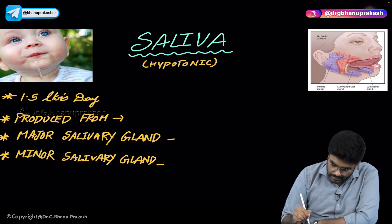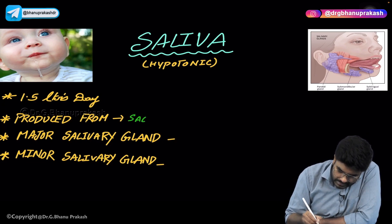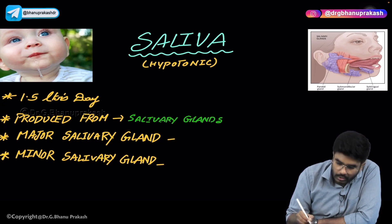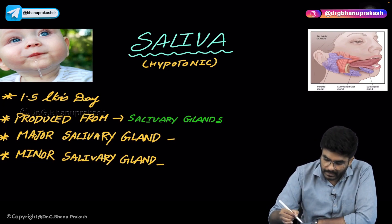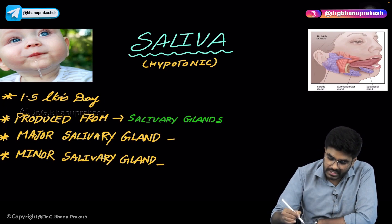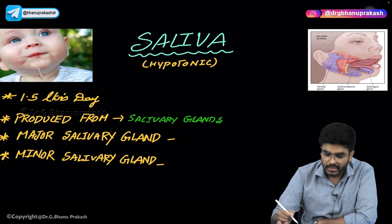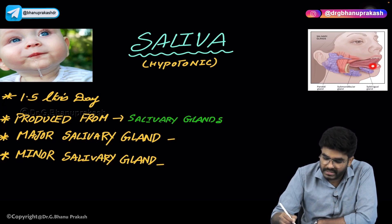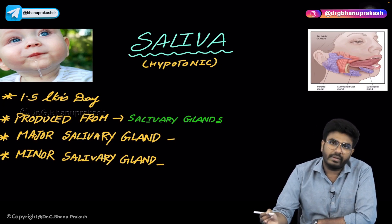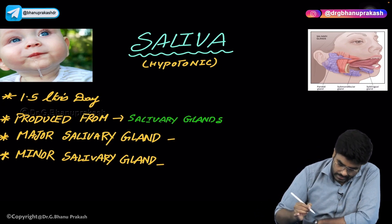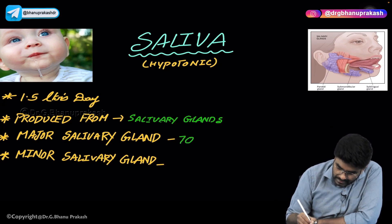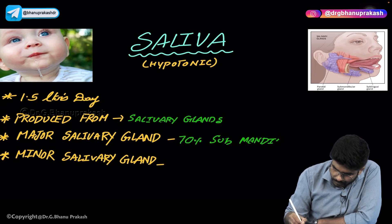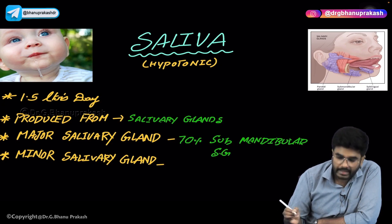Saliva is produced from salivary glands. There are three important salivary glands. There is the parotid gland, which is present in the cheeks, along with its duct. There is the sublingual salivary gland, present below the tongue. And there is the submandibular salivary gland, present below the mandible. Out of all these three, the submandibular salivary gland is the major salivary gland.